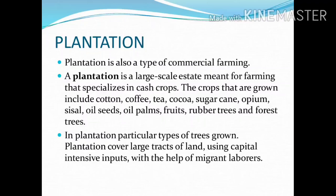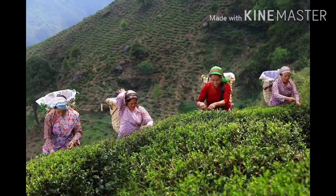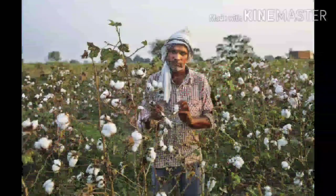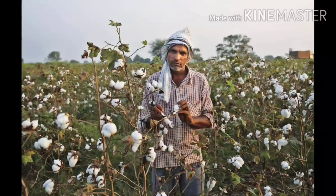A plantation is a large-scale estate meant for farming that specializes in cash crops. The crops that are grown include cotton, coffee, tea, cocoa, sugar cane, opium, sisal, oilseed, oil palm, fruits, rubber trees, and forestry. In plantation, only a particular type of plant is grown over large tracts of land using capital-intensive inputs with the help of migrant laborers, and it is grown for selling, that is for commercial purpose.